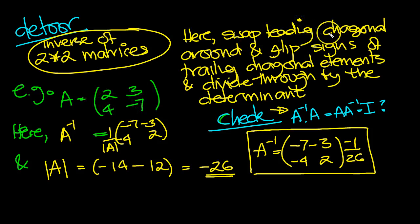You swap the leading diagonal around. So can you see the 2 and the minus 7 get swapped? And then you flip the signs of the trailing diagonal. So that was the leading diagonal, which you swap around. Then the trailing diagonal, you flip the signs. So whatever that is, you flip the sign of it. And whatever this sign is, you flip the sign of that. Which we've done in this example here.